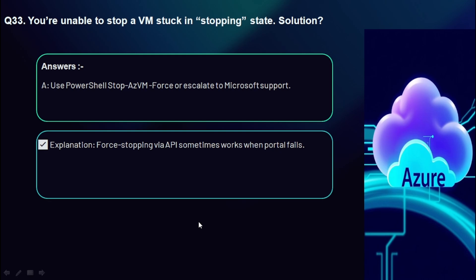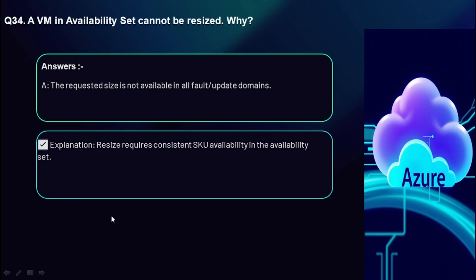Question 33: You're unable to stop a VM stuck in the 'Stopping' state — what's the solution? Use the PowerShell command 'Stop-AzVM -Force' or escalate to Microsoft Support. A VM stuck in stopping/deallocating state means the stop operation could not be completed. This can occur due to platform issues during deallocation, extension issues preventing shutdown, Azure control plane not receiving acknowledgement from the guest OS, the guest OS being stuck during shutdown, or dependency issues like ongoing backup or Windows Update.